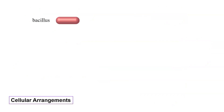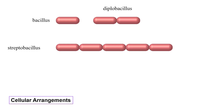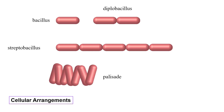With bacilli, since they're elongate, you can get a single bacillus, a diplobacillus, or a streptobacillus where they divide in a chain like links on a sausage. We also have a palisade, where they stack and stay together, though that's difficult to see unless you're very careful when making the preparation.